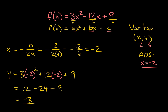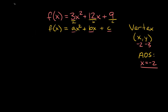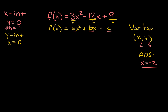The last thing we want to find are the x and y-intercepts. A helpful rule: to find the x-intercepts, set y equal to 0; to find the y-intercepts, set x equal to 0 — they're opposite pairs. To find the x-intercepts, we set f of x equal to 0. So we have 0 equals 3x squared plus 12x plus 9, and we're going to have to factor this to solve for x.